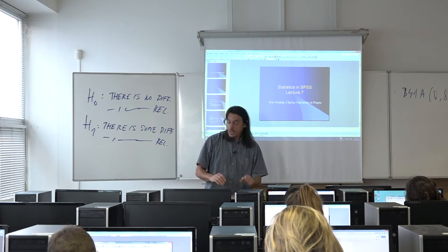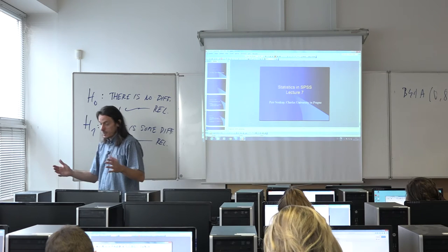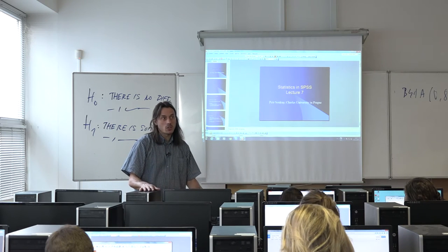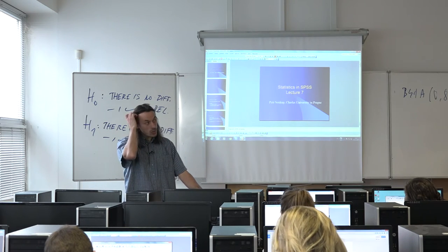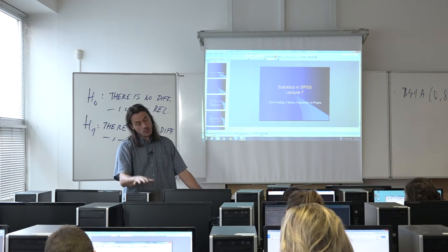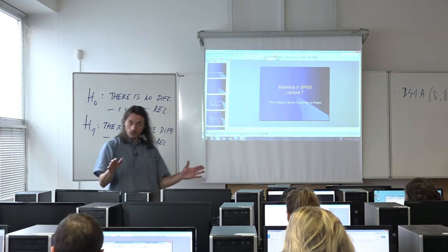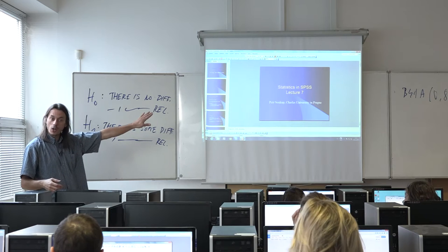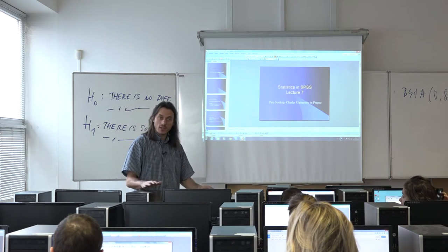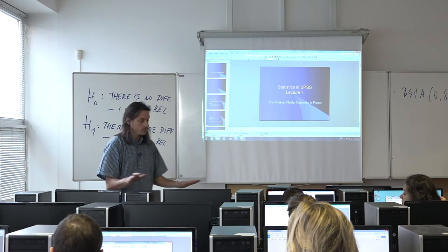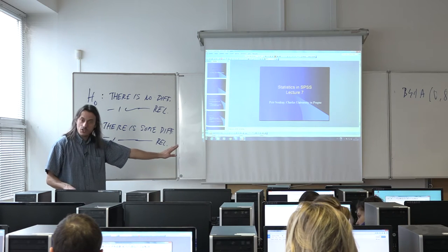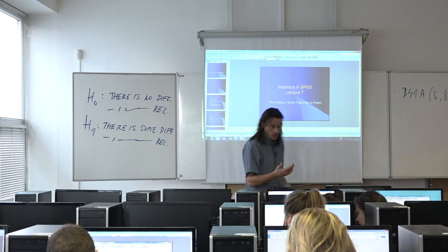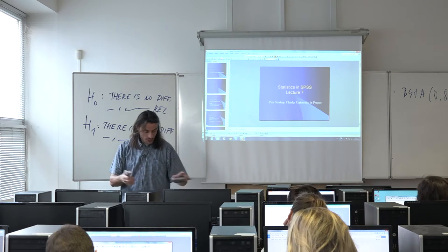Another example involves the relationship between two or more variables. For instance, we could try to measure the relationship between a respondent's education and their father's education. The null hypothesis would say there is no relationship — your education is not influenced at all by your father's education. The alternative hypothesis would say there is some relationship.